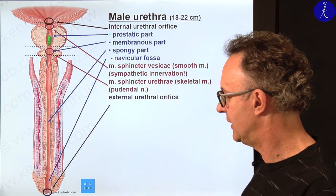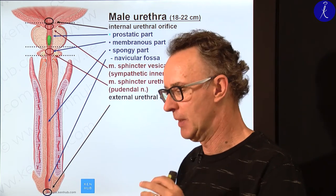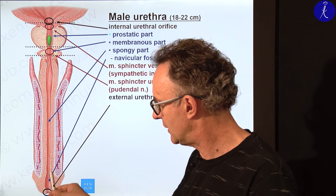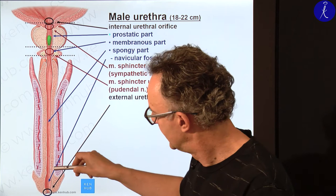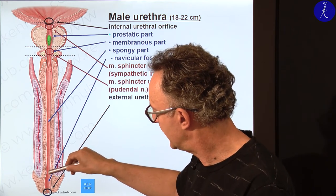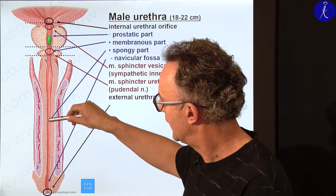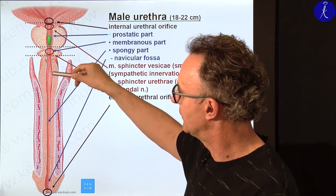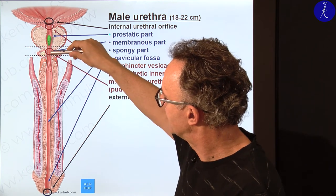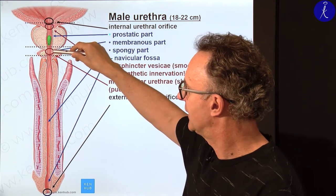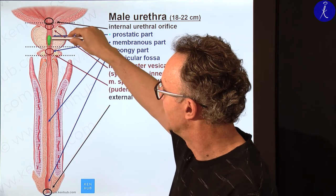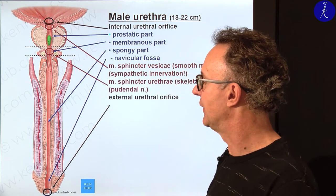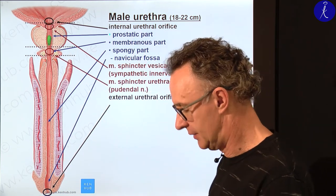If you want to insert a catheter, you need to know the constrictions of the urethra. First there is a dilated part; then behind the navicular fossa, especially in newborns, mucosal folds may cause difficulty. Then there is a dilated region where the urethra enters the corpus spongiosum. Further proximally, the first constriction is at the level of the external urethral sphincter, then difficulty at the prostate due to the seminal colliculus protrusion, and finally the internal urethral sphincter.